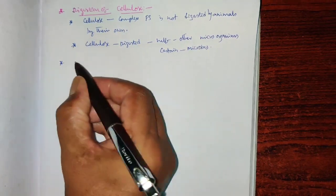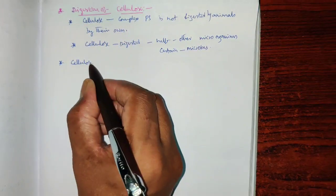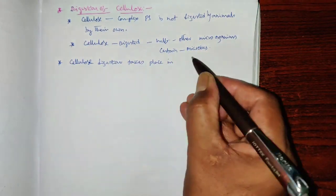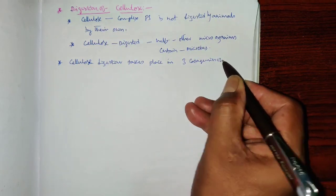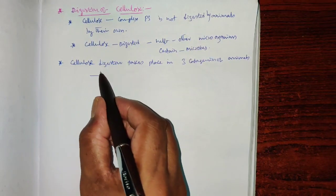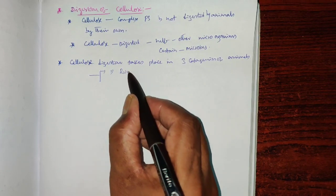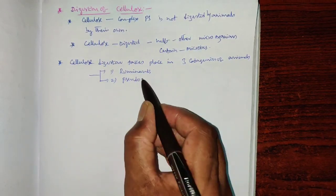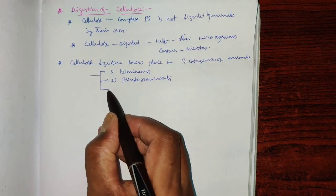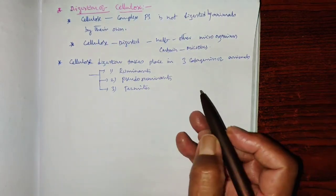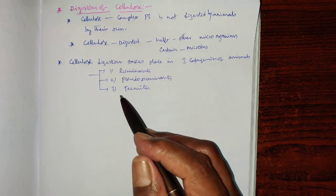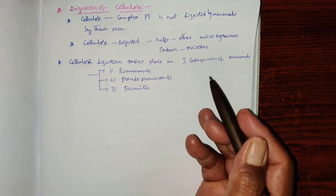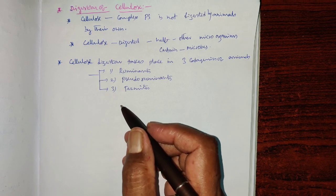Cellulose digestion takes place in three categories of animals: number one is ruminants, number two is pseudoruminants, and number three is termites. Cellulose cannot be digested by animals on their own since they require certain microbes for digestion, because the cellulase digestive enzyme is not synthesized in these herbivorous animals.